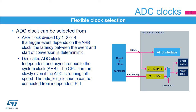The ADCs have a selectable clock source. When the system needs to run synchronously, the AHB clock source is the best selection. If a slow CPU speed is required but the ADC needs a higher sampling rate, the dedicated ADC clock can be selected. The ADC-KERCK source can be selected from the independent PLL.